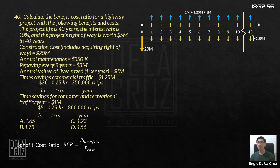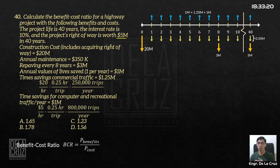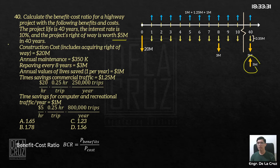Repaving every 8 years: 3 million every 8 years until the 40th year. The project's right-of-way is worth 5 million at the end of 40 years — that means there is a less cost, which should be subtracted from the total cost at the end of 40 years. So we deduct that from the cost at year 40.